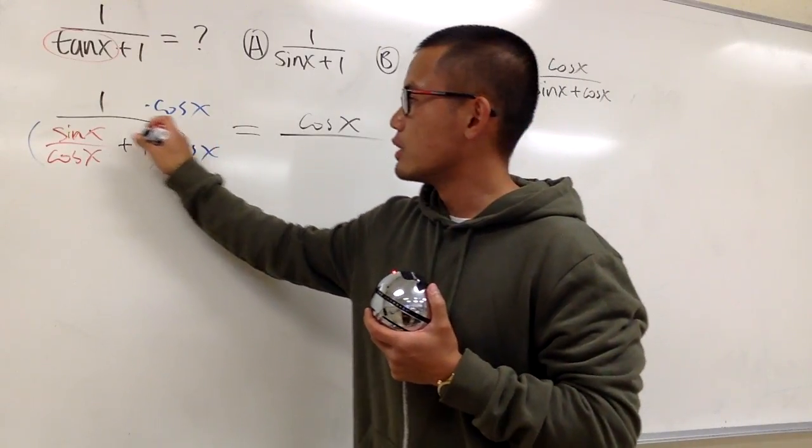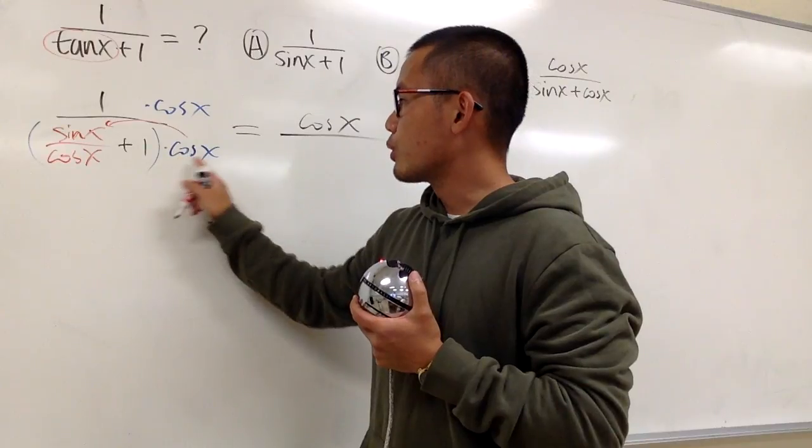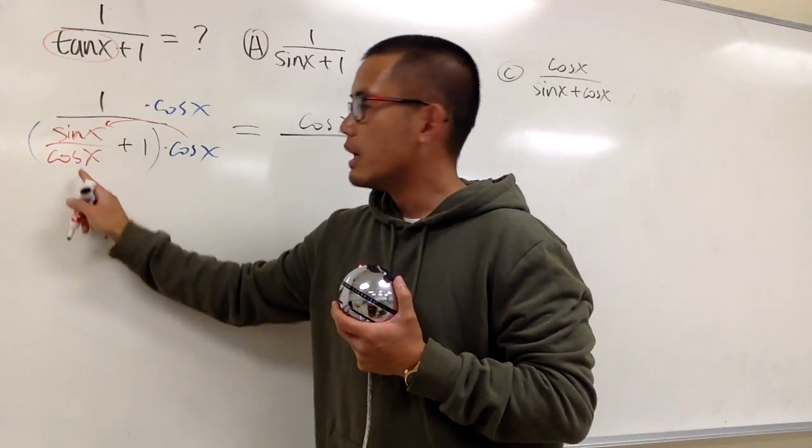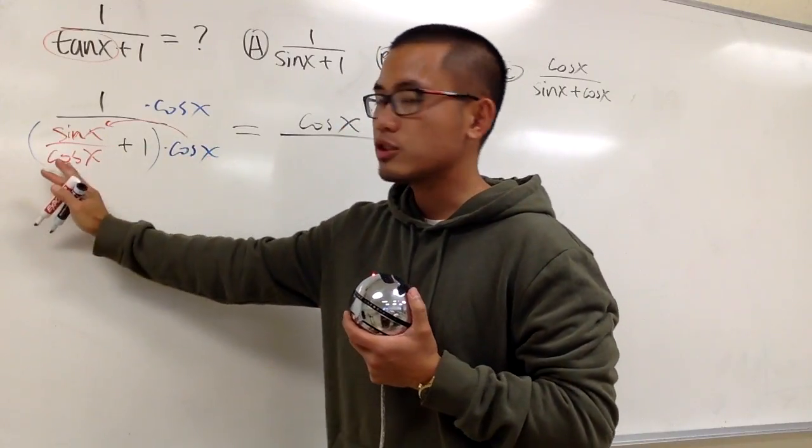We distribute cosine x with this. When you do cosine x times this, this cosine x and that cosine x will cancel out when you distribute.